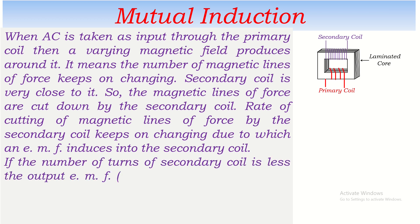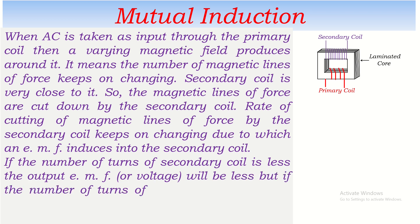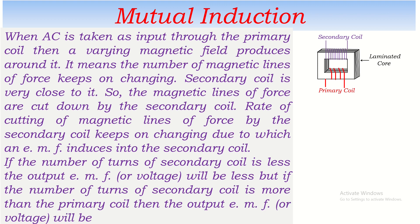If the number of turns of the secondary coil is less than the primary coil, the output EMF or voltage will be less. But if the number of turns of the secondary coil is more than the primary coil, then the output EMF or voltage will be high. This is how it changes high voltage AC into low voltage AC, or low voltage AC into high voltage AC. This is the basic understanding of the working of a transformer.